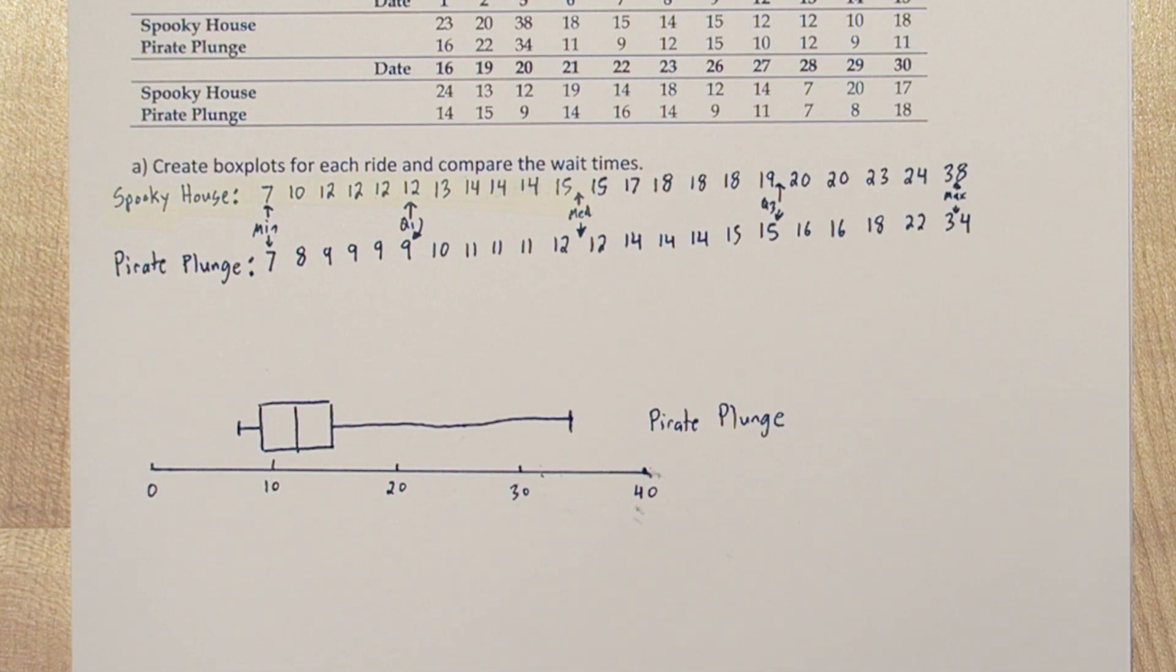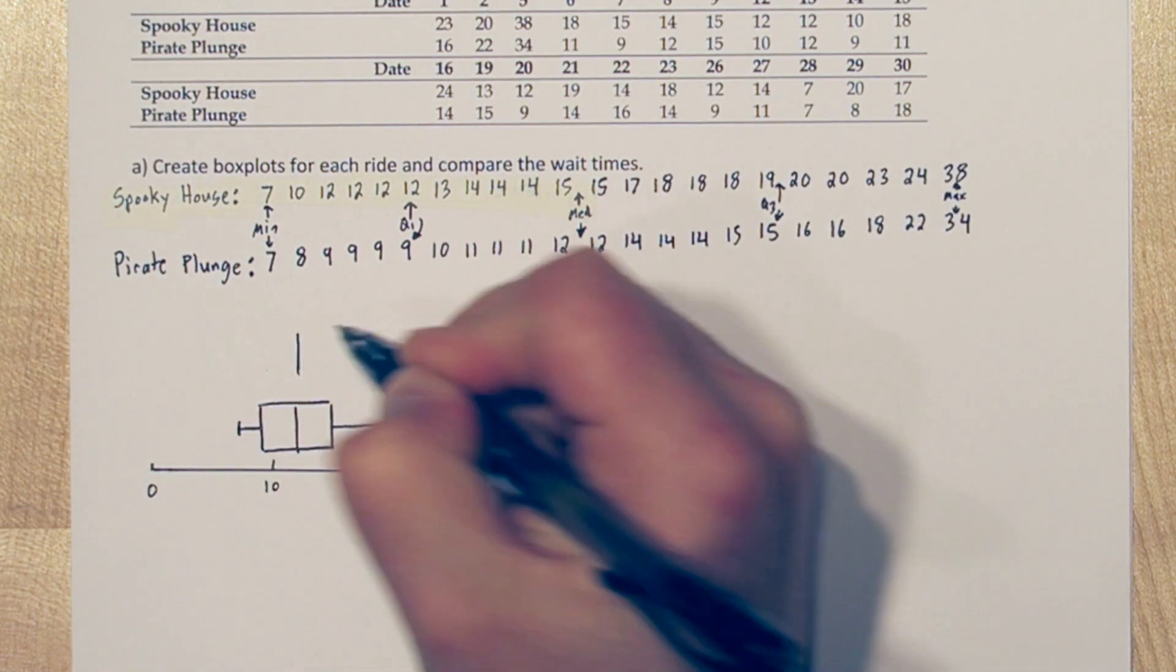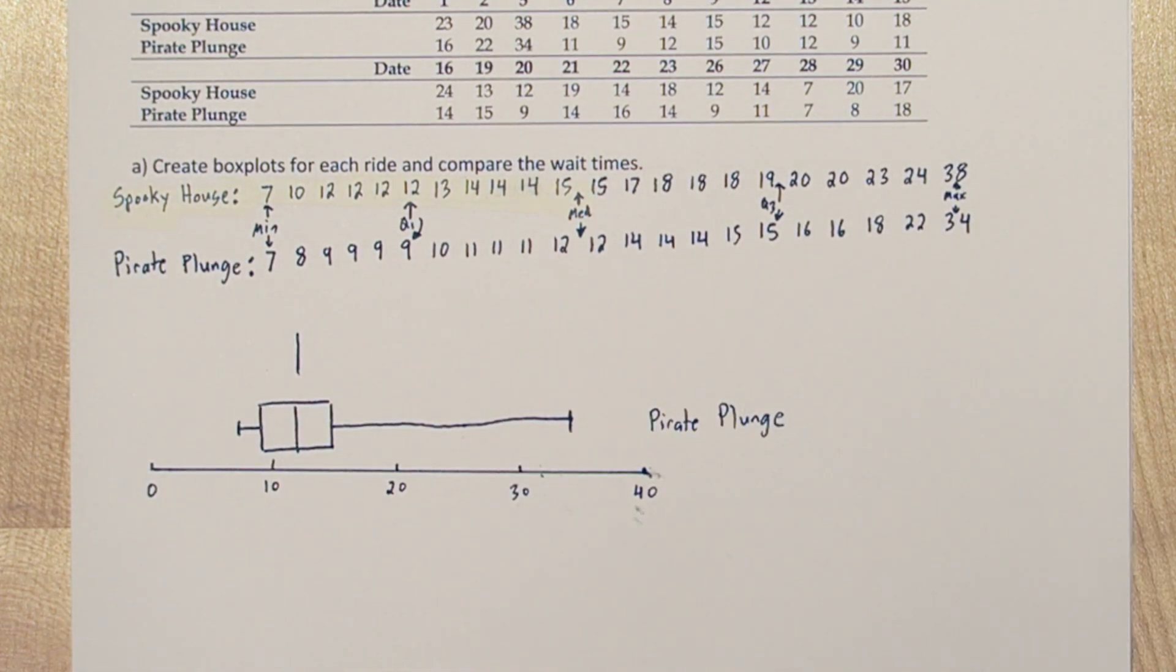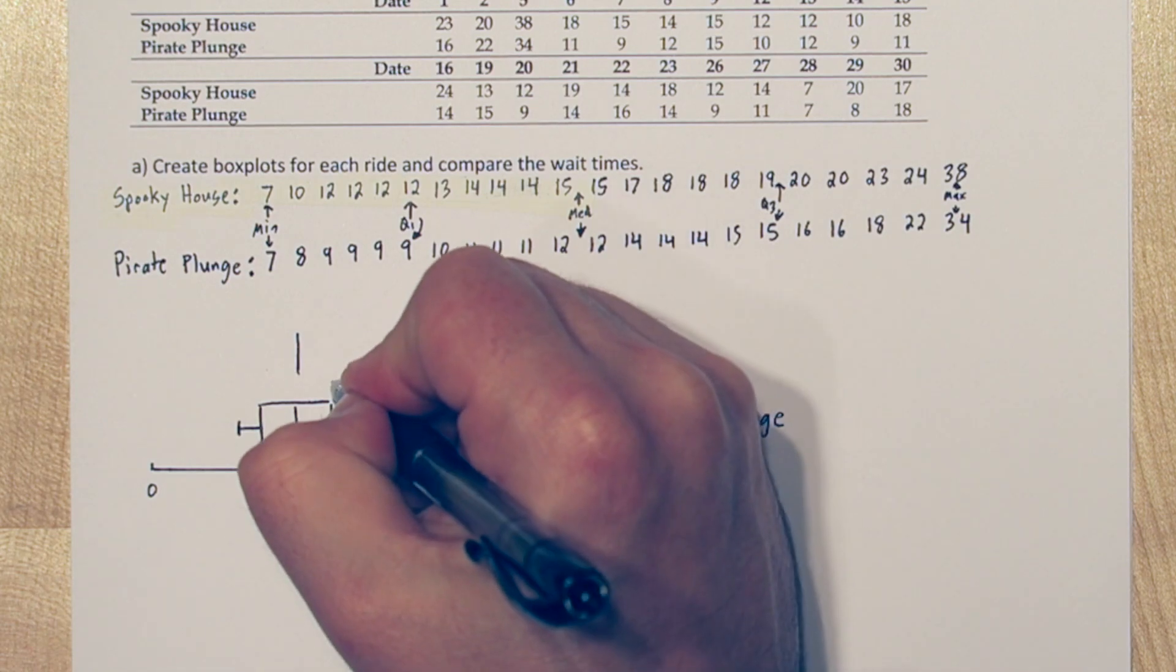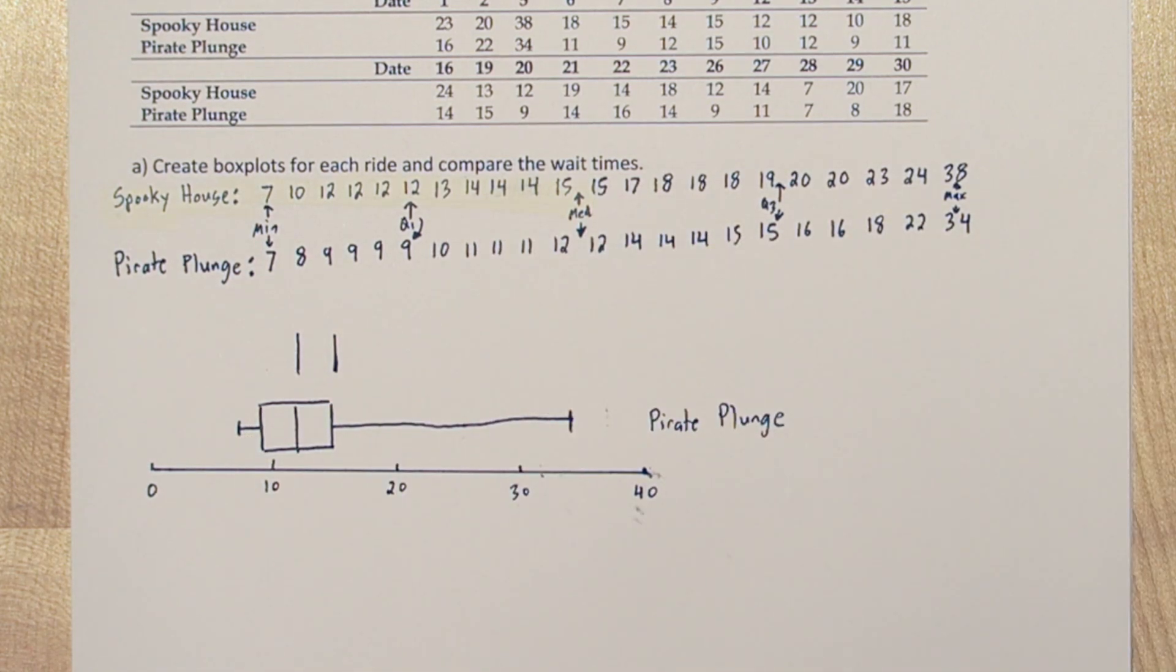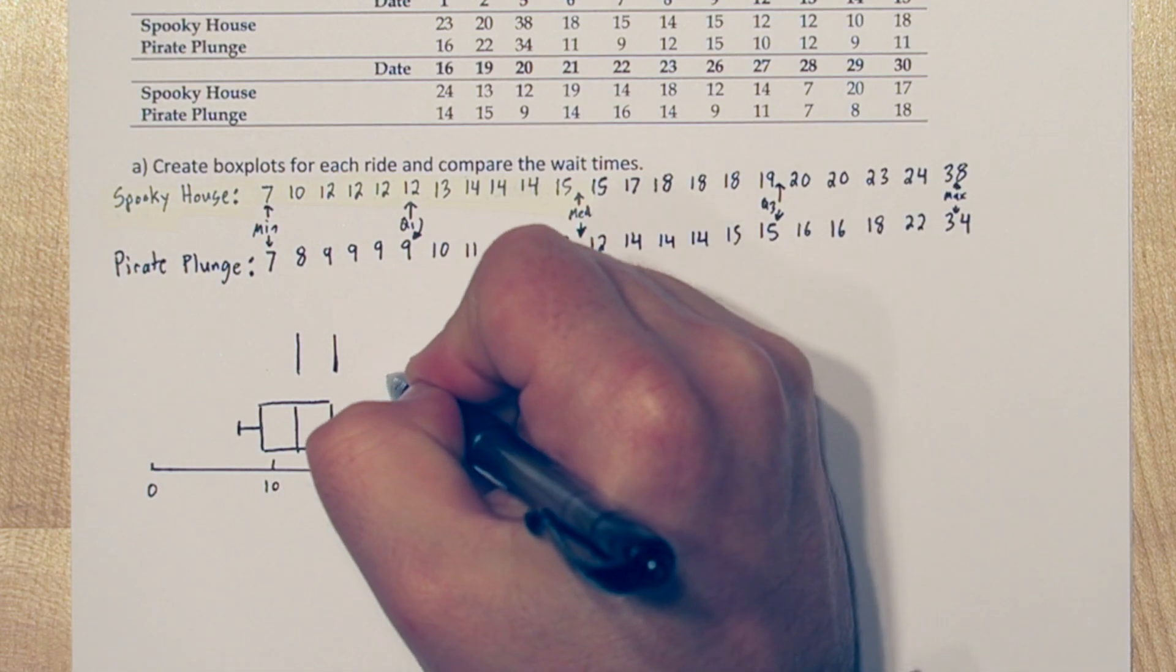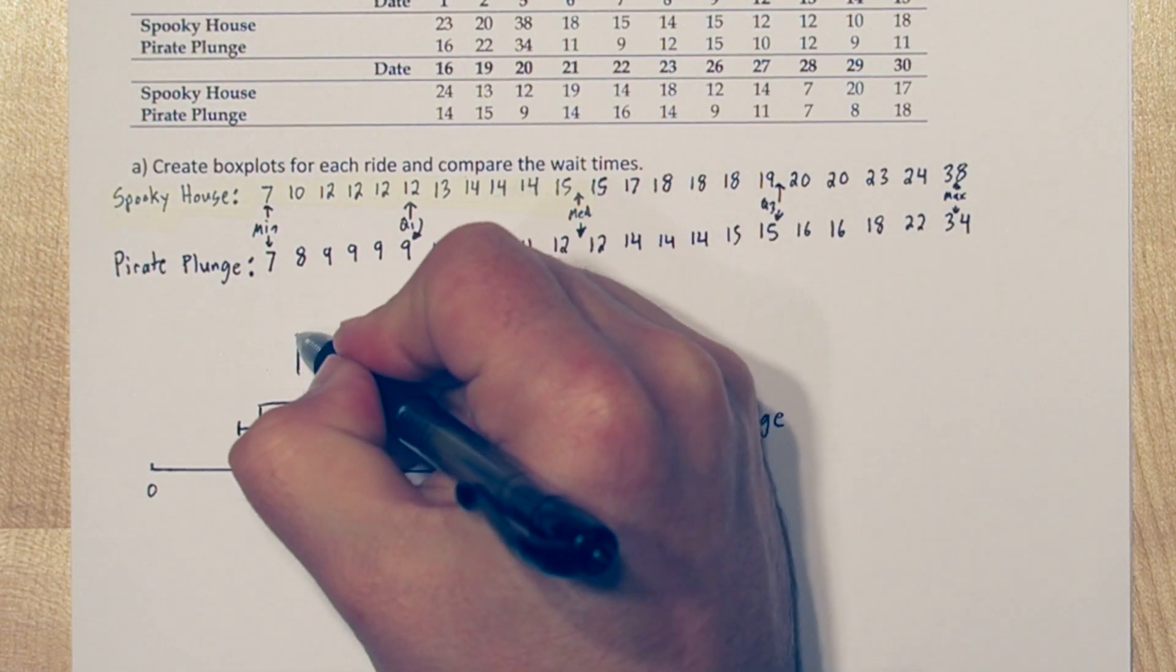Now let's do one for spooky house. So we'll start with quartile 1, median, and quartile 3 again. Quartile 1 is 12 in this case, which matches the median of Pirate Plunge. The median is 15, which matches quartile 3 of spooky house. And quartile 3 is 19.